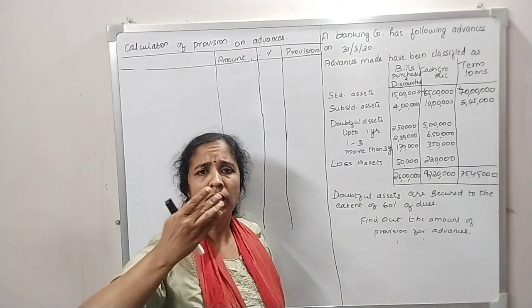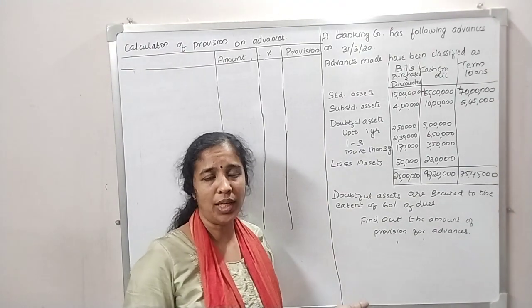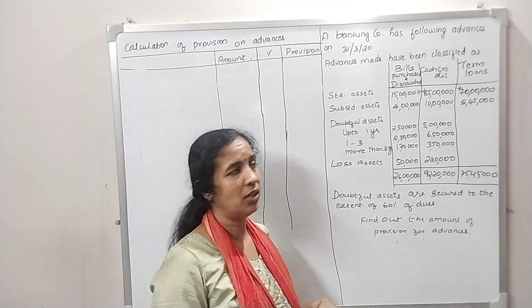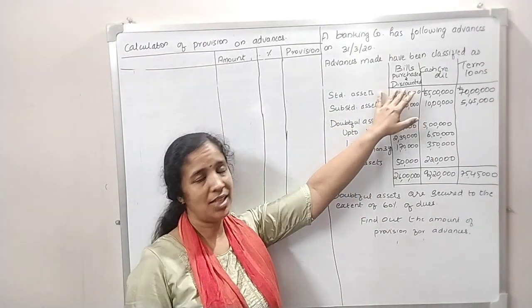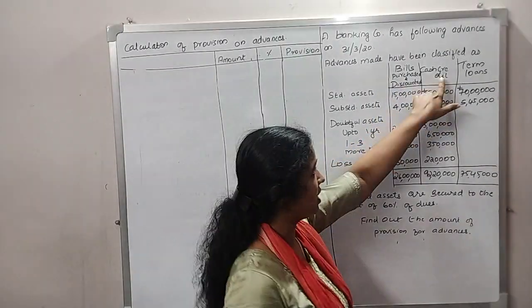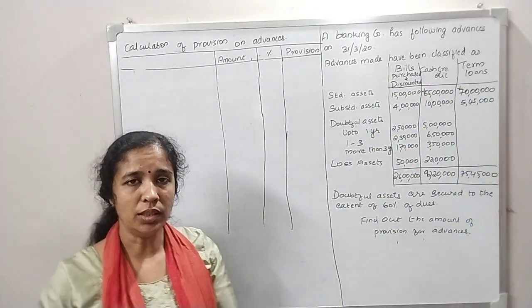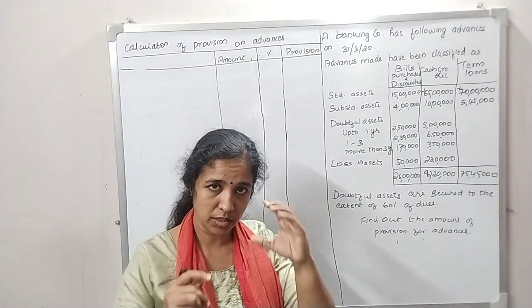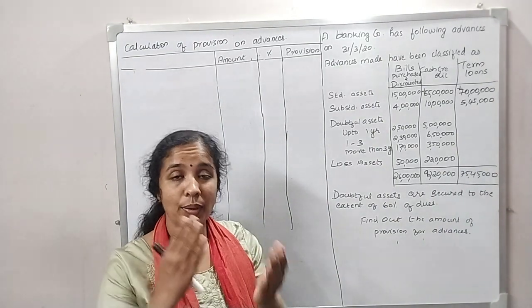There are three types of items available for purchase: discounted bills, cash, and time loans.